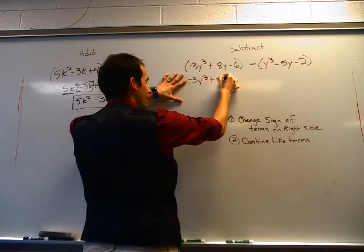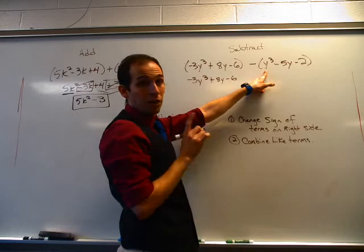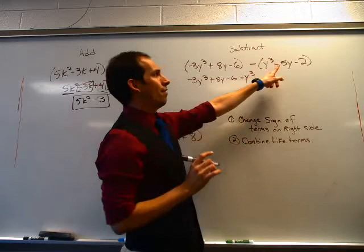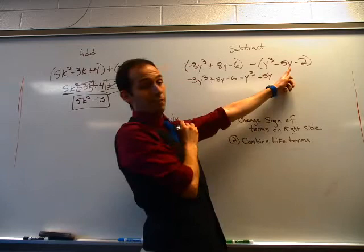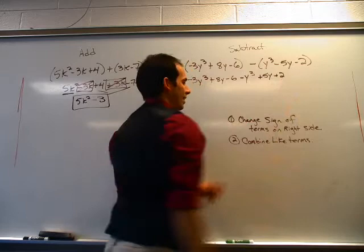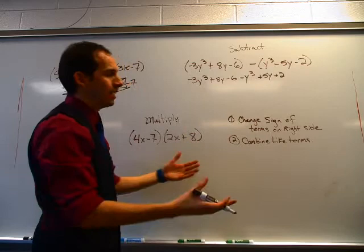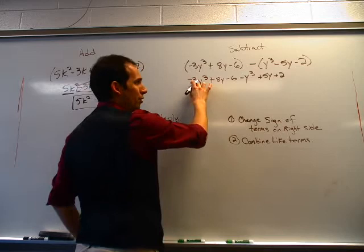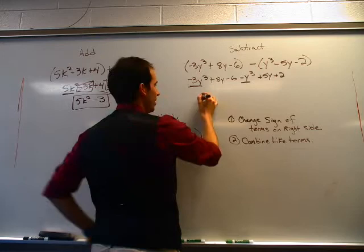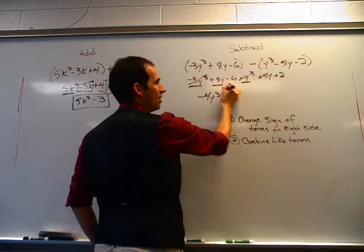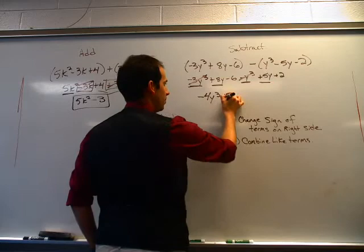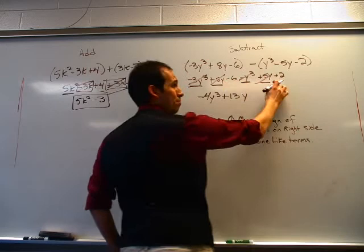So 3y cubed plus 8y minus 6. But now as I get to my right side, that is a positive y cubed, so I have to change it to negative y cubed. And then I have a negative 5y, so I'm going to change it to a positive 5y. Then I have a negative 2 — I'm going to change that to a positive 2. That's what I mean by changing the sign of everything on the right side. Now I'm going to combine the like terms. I have negative 3y cubed and a negative y cubed: negative 3 plus negative 1 is negative 4y cubed. I got a positive 8y and a positive 5y — 8 plus 5 is 13. And negative 6 plus positive 2 is going to be negative 4. And I'm done.